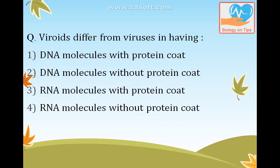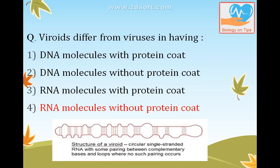Viroids differ from viruses in having RNA molecules without a protein coat. Viroids are infectious particles which have nucleic acid — specifically an RNA molecule — but they do not have a protein coat. So the answer is RNA molecules without protein coat.